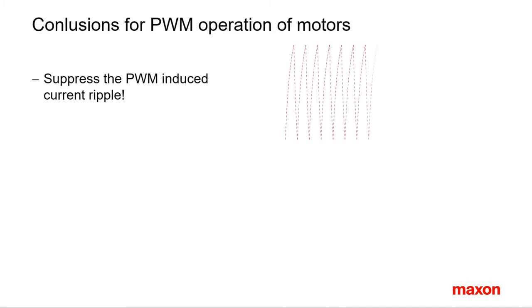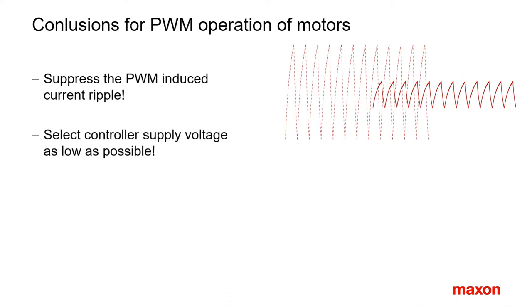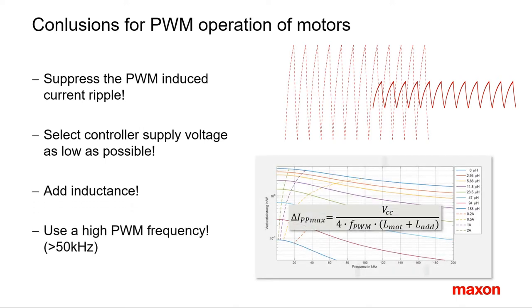A summary. Reduce the current ripple as much as you can. Select a low supply voltage in order to maximize the PWM duty cycle. Add extra inductance and use PWM frequencies of 50 kHz and above. Maxon controllers follow these rules as well. They have a high switching frequency and a built-in motor chokes to be well adapted to the low inductance Maxon windings.